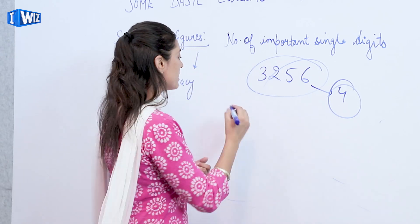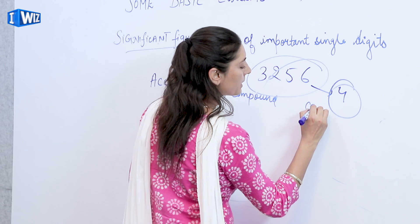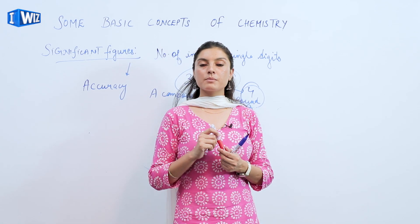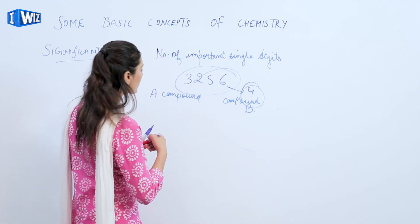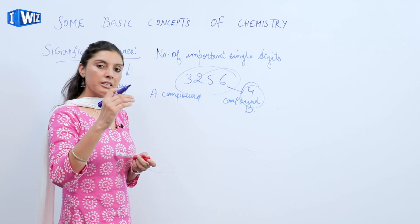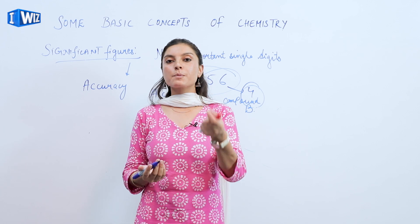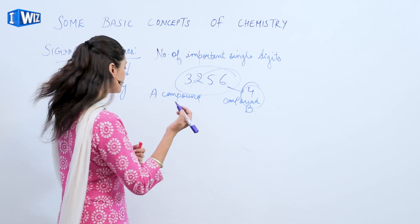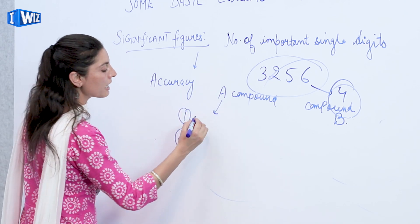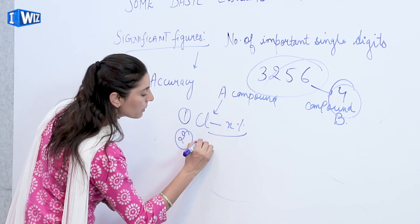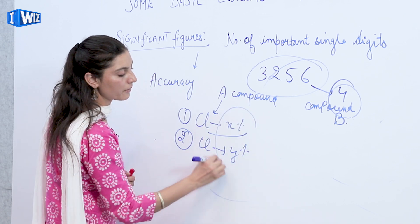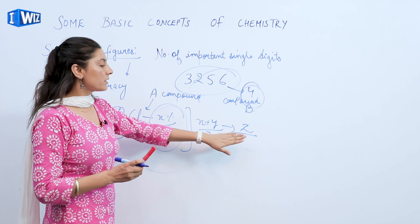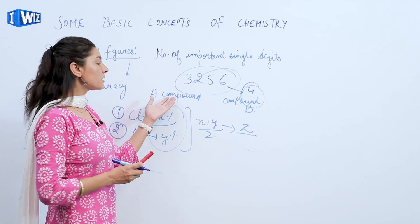Now let's talk about the accuracy concept for significant figures. Consider compound A and compound B. When we have to calculate the percentage of chlorine in these compounds, we make use of the concept of accuracy. Accuracy defines that we have performed the experiment, say two times, and we get the experimental value of chlorine from that compound. We will find out the mean of those values. In compound A I found x percent chlorine and in compound B I found y percent chlorine, so I take the mean of these two values.